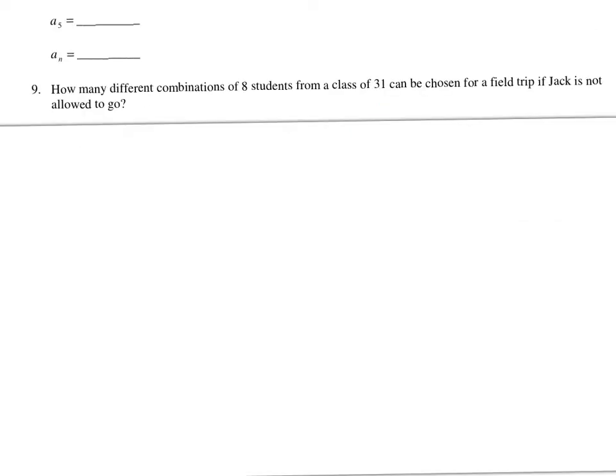Next, how many different combinations of 8 students from a class of 31 can be chosen to go on a field trip if Jack is not allowed to go? It's a combination — the order doesn't matter. We're picking 8 students, but since Jack can't go, we have 30 students in the pool instead of 31. So this is 30 choose 8.